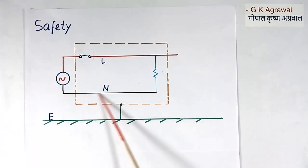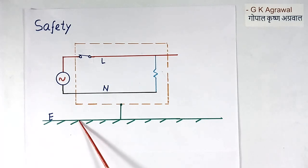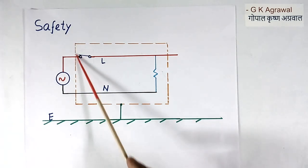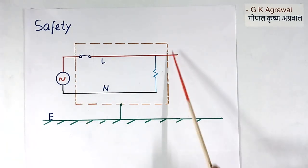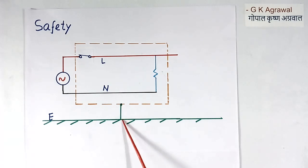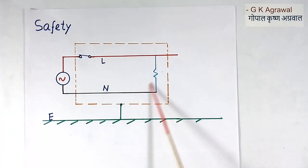Now, neutral is not connected to earth in the insulated neutral system. So for safety reasons, we provide an enclosure, and the enclosure body is connected to earth for safety. And nobody is allowed to touch inside.